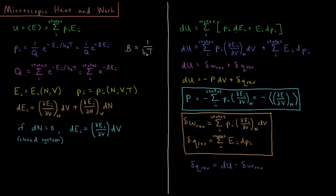We can substitute in the expression for dEi for closed systems. So the change in internal energy becomes the sum over all states of the probability times the partial derivative with respect to volume times dV, plus the sum over all states of the energy of that state times the change in probabilities.